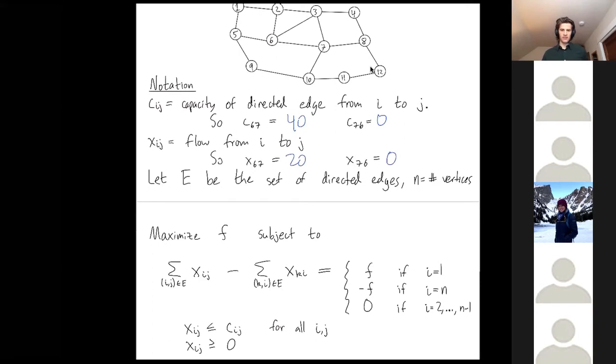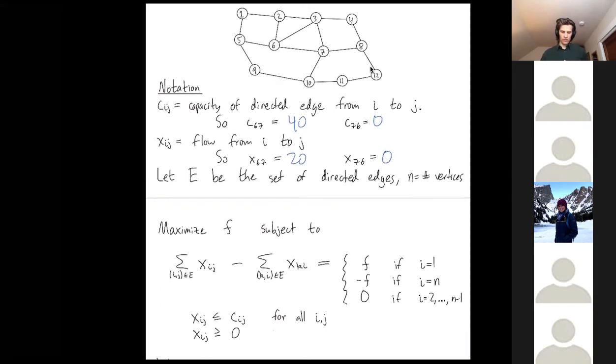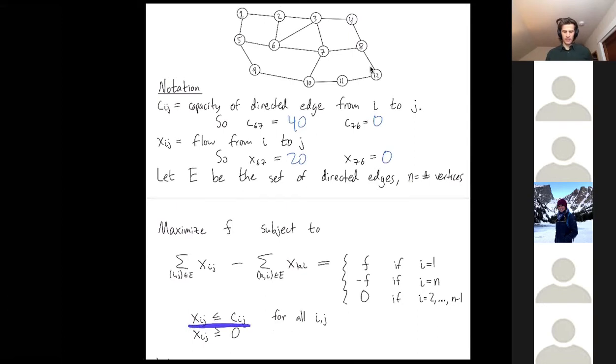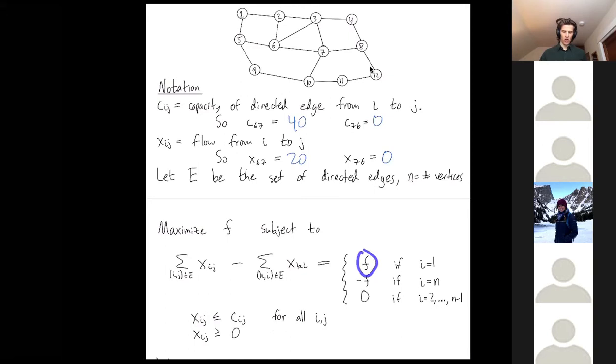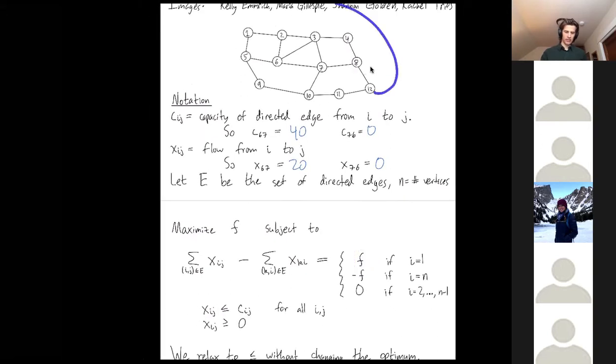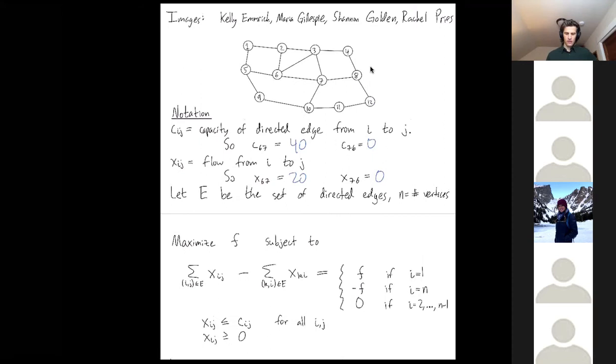We have a constraint for each vertex. We furthermore have capacity constraints for each directed edge. The flow along an edge should be at most the capacity and the flow everywhere should be non-negative. I should say that people often incorporate this flow F by adding in an extra directed edge going from the sink back to the source. Then that flow is no different than just the flow you choose along any other directed edge, except it's along this blue directed edge. So that's a very reasonable perspective that makes a lot of sense.